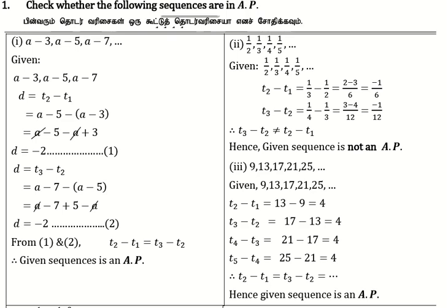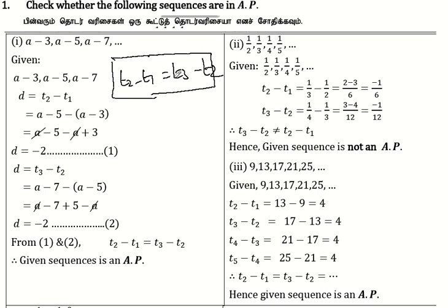I will check whether the following sequence is an AP. The condition we have to verify is: Term 2 minus Term 1 equals Term 3 minus Term 2. Let's look at the difference.